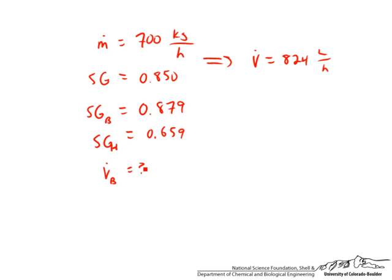To do this we will basically add up our components for both the total mass and total volume equation. We can say that we know the two components in our system are benzene and hexane. If we add those two mass flow rates, we expect to get a total mass flow rate of 700 kilograms per hour. But we don't yet know what the individual mass flow rates of the benzene and hexane are.